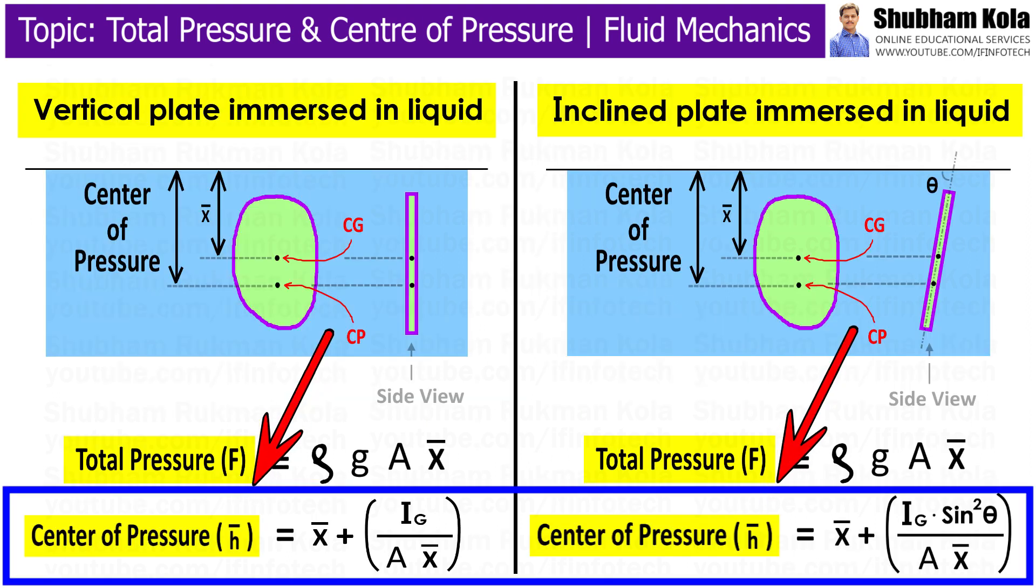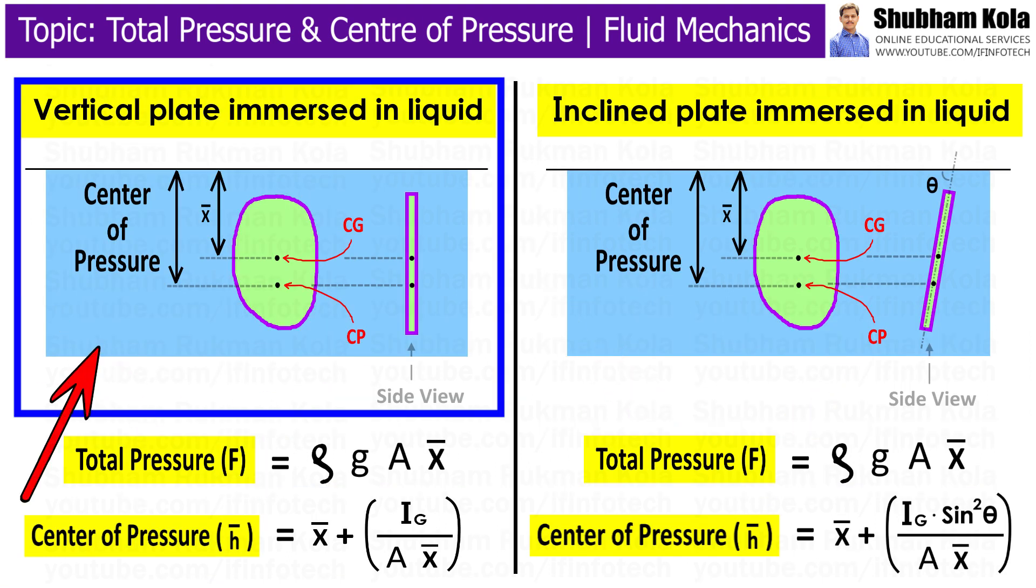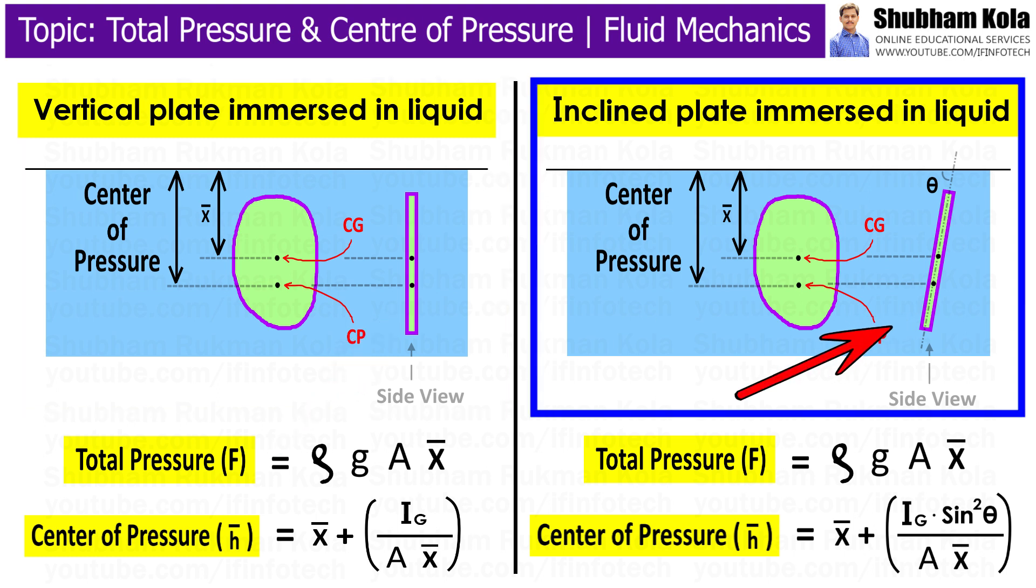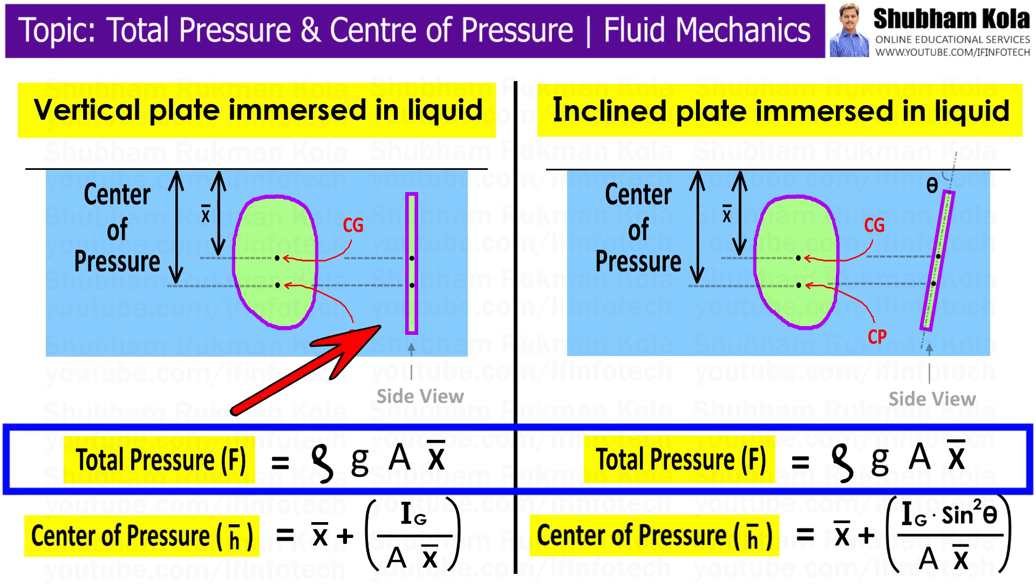The position of the center of pressure and the total pressure exerted by a liquid on vertical plate immersed in liquid and inclined plate immersed in liquid are as shown in figure. The total pressure on a vertical plate and inclined plate is given by ρgA times X-bar. As you can see, there is no change in equation for the total pressure whether it is vertical plate or inclined plate.